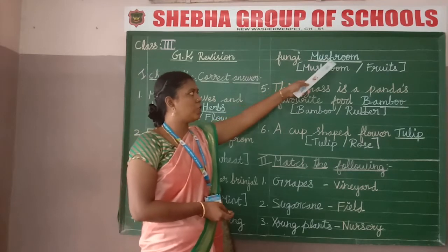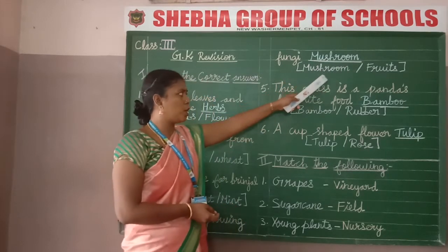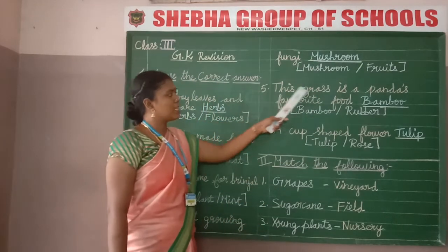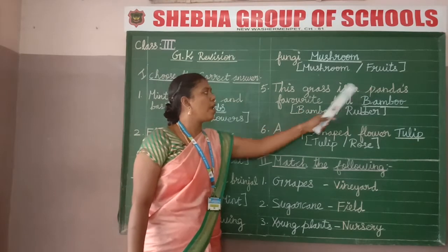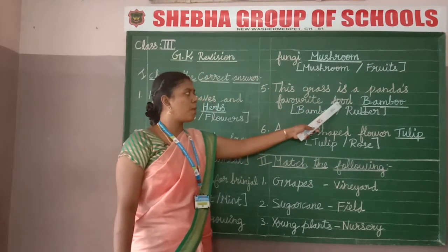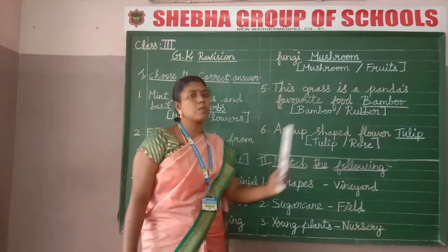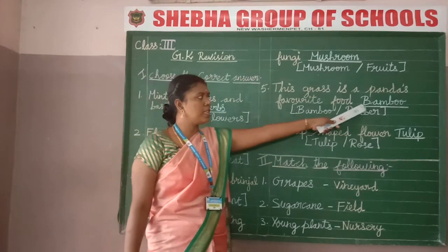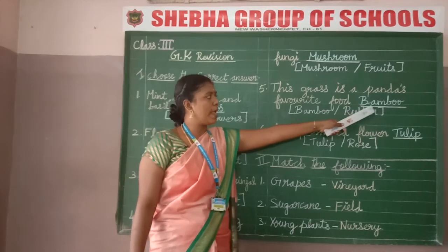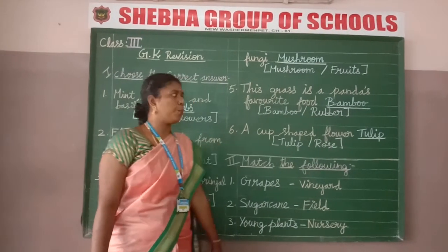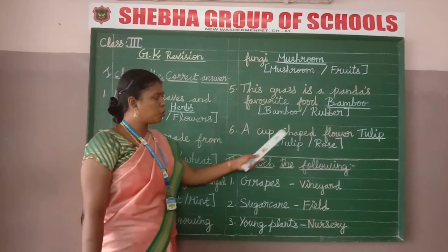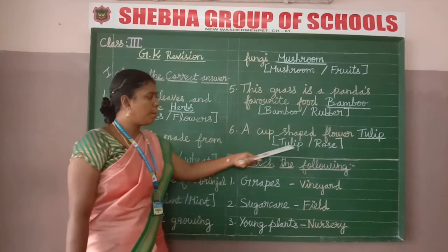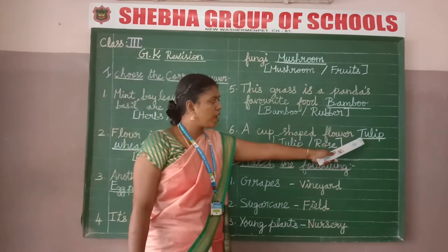Spelling of mushroom: M-U-S-H-R-O-O-M. The correct answer is mushroom. Number 5: this grass is a panda's favourite food — the answer is bamboo. Bamboo means mungin. Options are bamboo and rubber. Correct answer is bamboo. Spelling: B-A-M-B-O-O. Number 6: a cup-shaped flower — the answer is tulip. Options are tulip and rose. Correct answer is tulip. Spelling: T-U-L-I-P.